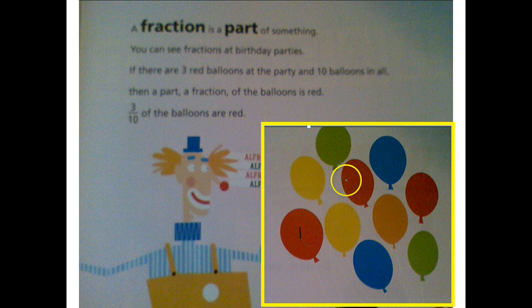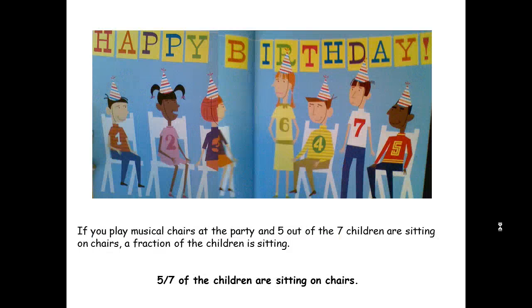So we have one, two, three of the ten. If you play musical chairs at the party and five out of the seven children are sitting on chairs, a fraction of the children is sitting. Five sevenths of the children are sitting in chairs.